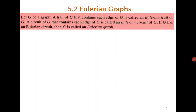Good morning everyone. Recall that in the last class we were discussing Eulerian graphs. An Eulerian graph is a graph which consists of an Eulerian circuit — a closed trail passing through all the edges. There is no repetition of edges but repetition of vertices is allowed.